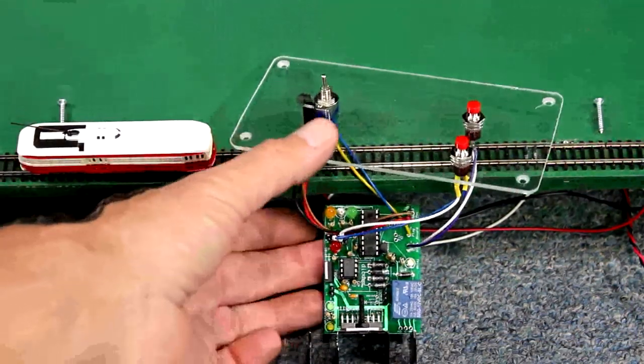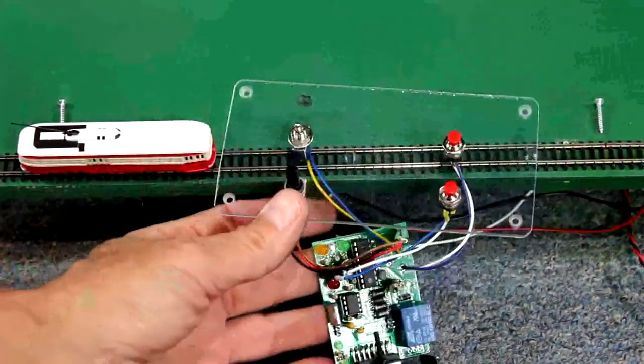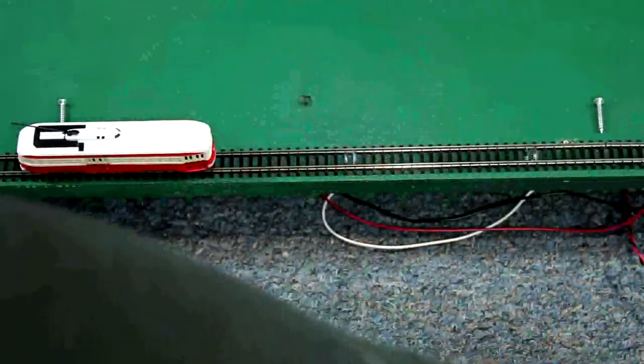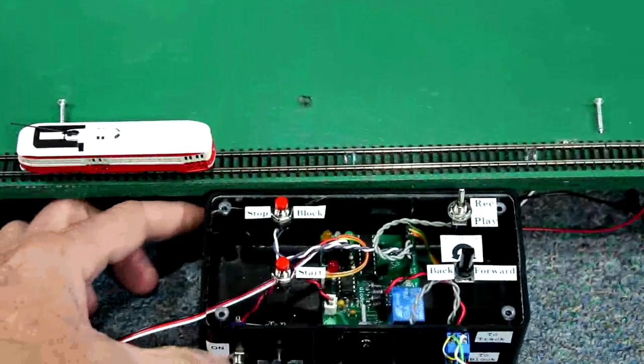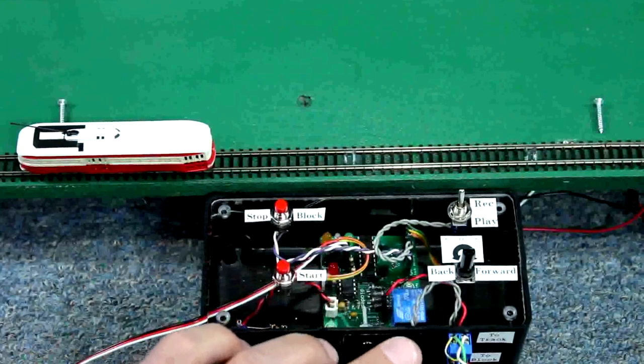This is the board we've been working with for the record playback controller. You can see that I brought the controls out onto a piece of plexiglass. Here's another implementation of that where the plexiglass has been mounted on top of a project box and the board has been mounted inside. I brought the heatsink out through the back.